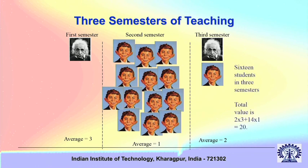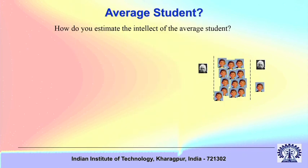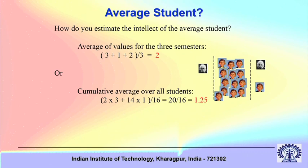The question is that essentially the teacher has taught 16 students in 3 semesters and total value of intellect is 2 times the genius and 14 times the ordinary student. The question is how do you estimate the intellect of the average student? If it is asked now that what is the average intellect of the student that whom you have taught, one way is average value for the 3 semesters: 3 plus 1 plus 2 divided by 3, that is 2. The other is cumulative average over all students. What you do is that you find out the total intellect divide by the total number of students. So 2 into 3 plus 14 into 1 divided by 16, this becomes 1.25.